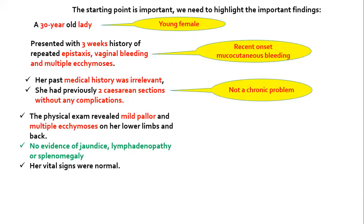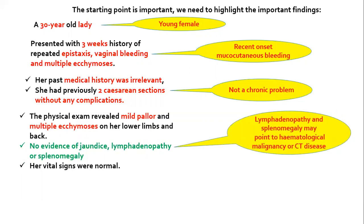The physical exam is also important. She had mild pallor and multiple ecchymosis, but jaundice, lymphadenopathy, and splenomegaly are absent. The presence of lymphadenopathy and splenomegaly would make us think of hematological malignancy or connective tissue disease. Their absence does not exclude those diagnoses, but makes them less likely. The vital signs were normal.